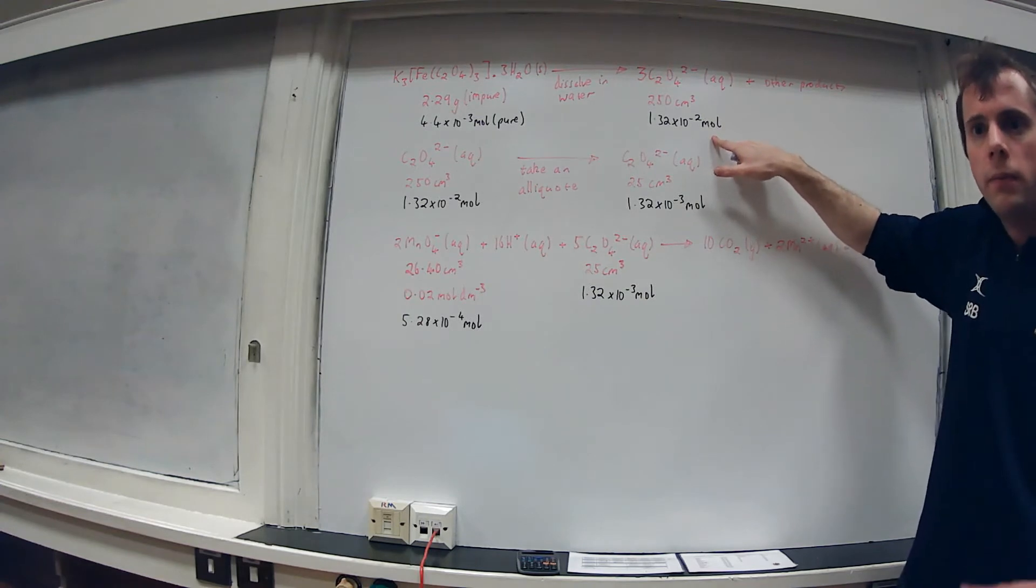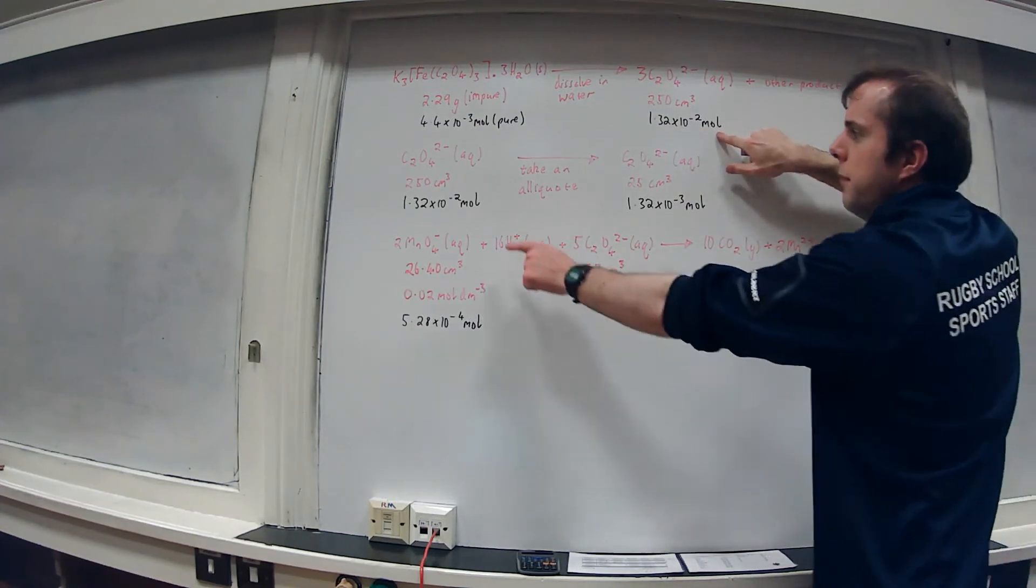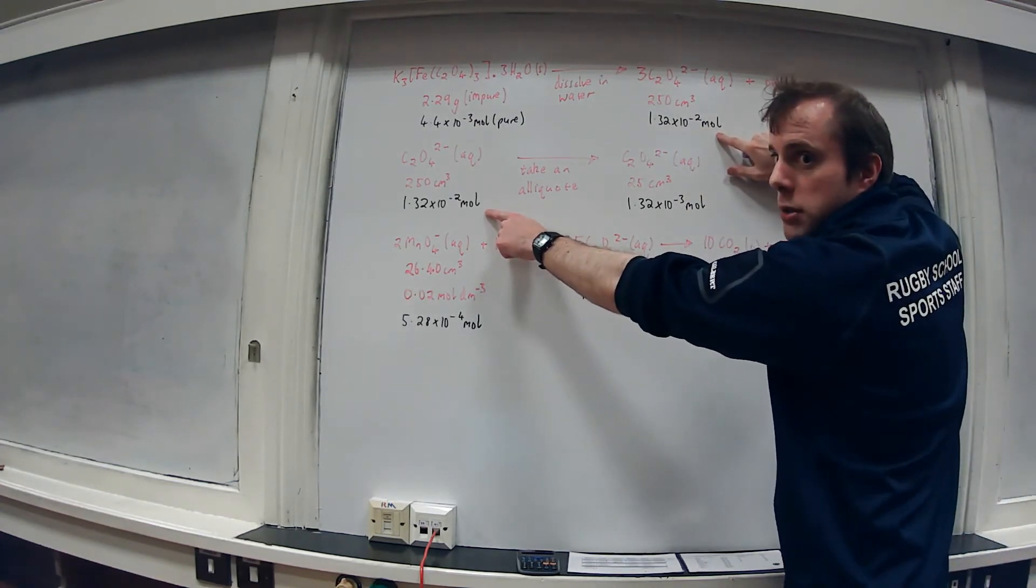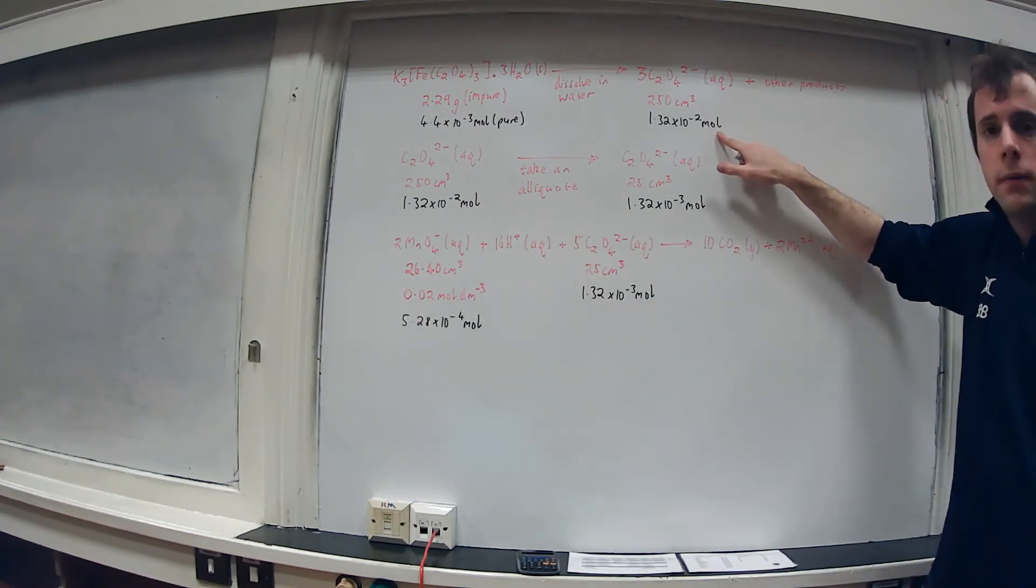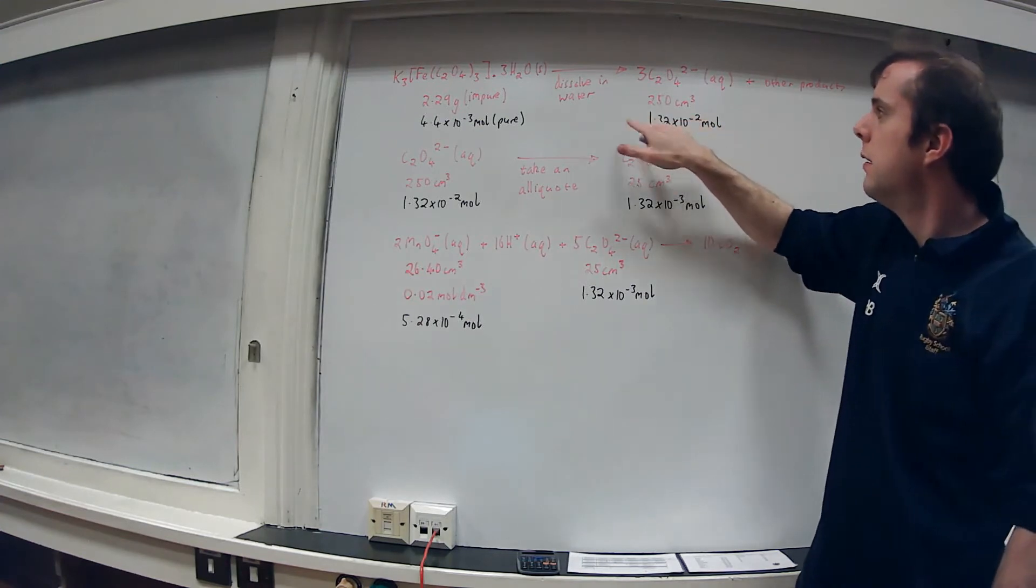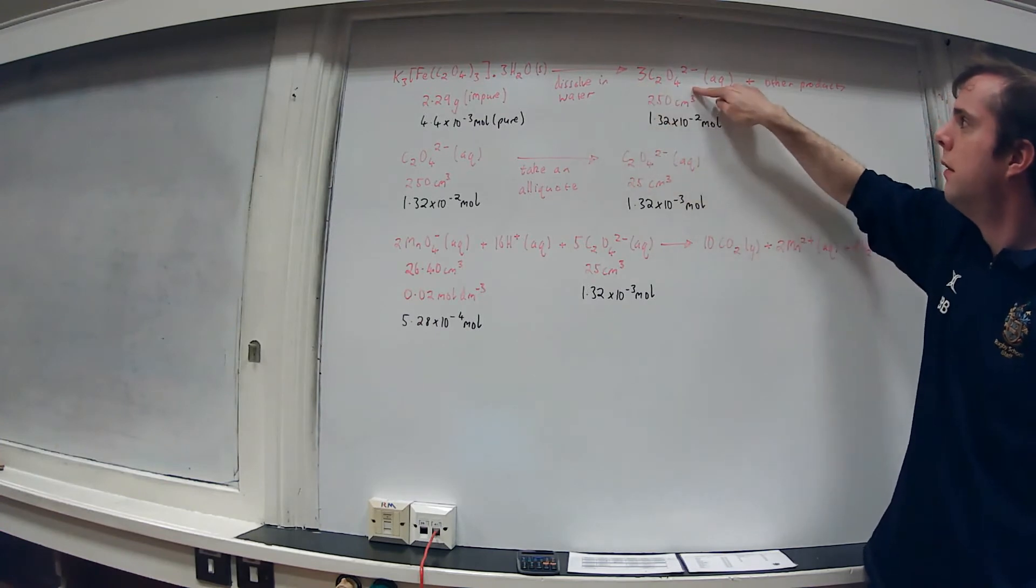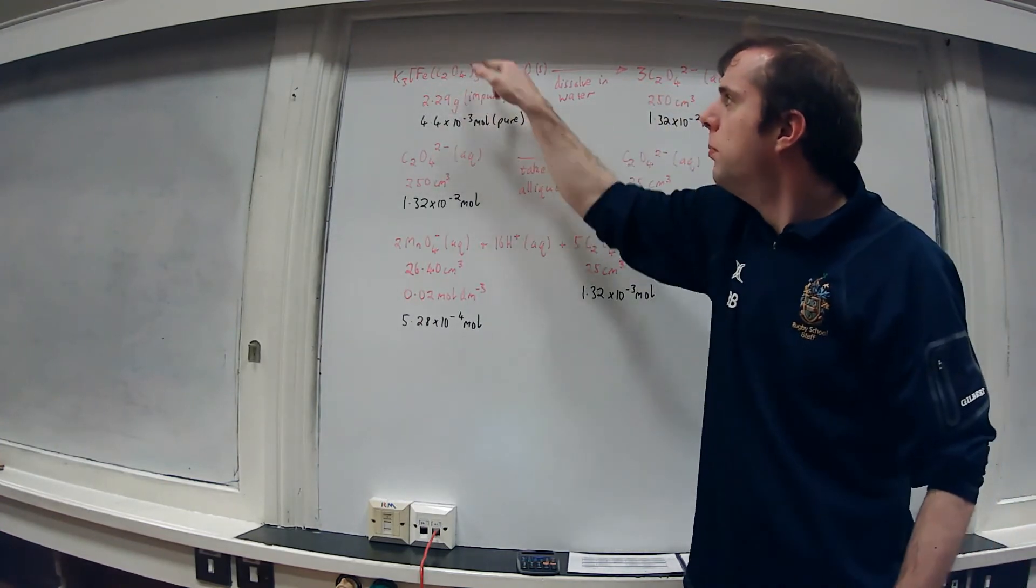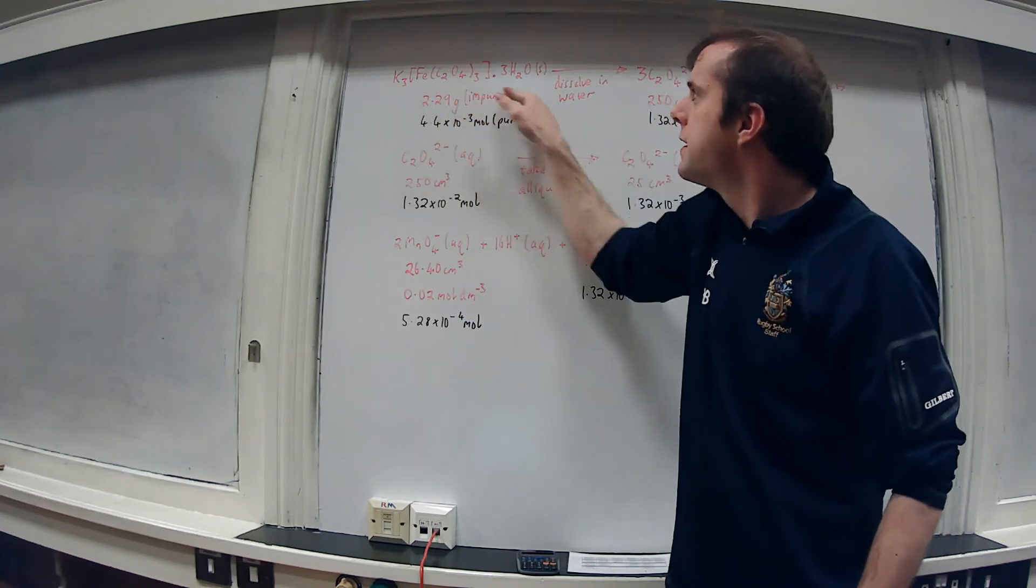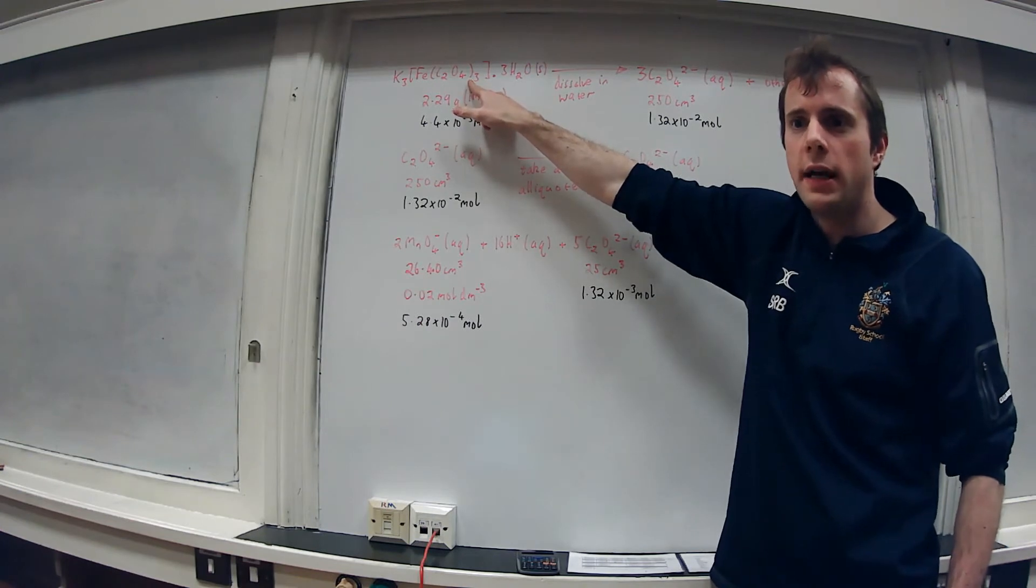Equally up here, when we dissolved the sample in the water we had 1.32 times 10 to the -2 moles. The number of moles shouldn't change between those two points. And then to go from here to here, we can see that we've got three of the oxalate ions on this side, and in this complicated formula this whole thing contains within it three oxalate ions.